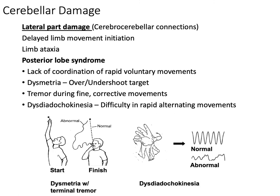The last damage scenario is to the posterior lobe, i.e., damage to PICA. Also note that anterior lobe damage corresponds to the superior cerebellar artery. For posterior lobe damage, remember that the posterior lobe — essentially the lateral portion — is associated with motor coordination and limb coordination. So you're going to have limb ataxia, delayed limb movement initiation, a lot of discoordination, and poor initiation of movement.